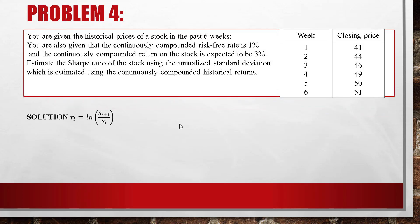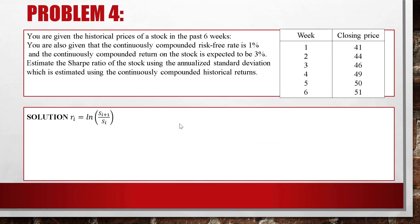Problem 4. You are given the historical prices of a stock over the past 6 weeks. The continuously compounded risk-free rate is 1% and the continuously compounded expected return on the stock is 3%. Estimate the Sharpe ratio using the annualized standard deviation estimated from the continuously compounded historical returns.